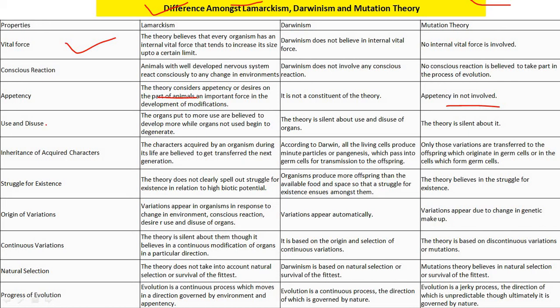Regarding use and disuse of organs: Lamarck said organs put to more use develop more while organs not used degenerate. Darwinism is silent about use and disuse of organs. Regarding inheritance of acquired characters: Lamarckism holds that characters acquired by an organism during its life are transferred to the next generation. According to Darwin, all living cells produce minute particles called pangenes which pass into germ cells for transmission to offspring. Mutation theory states that only variations in germ cells or cells forming germ cells are transferred to offspring.